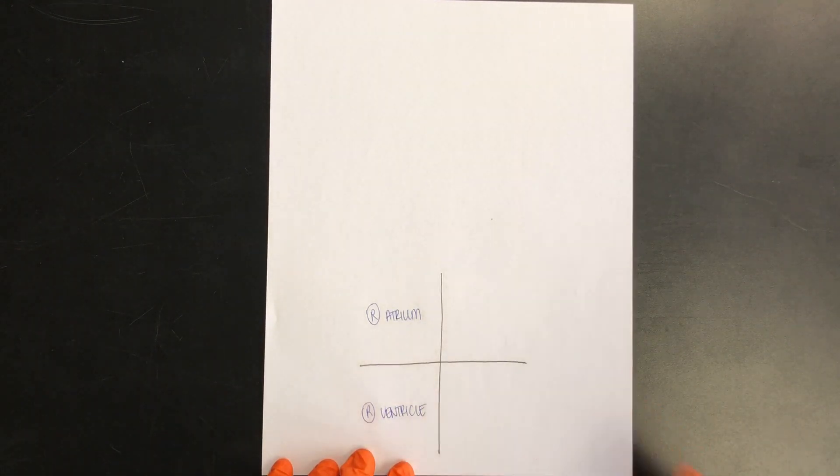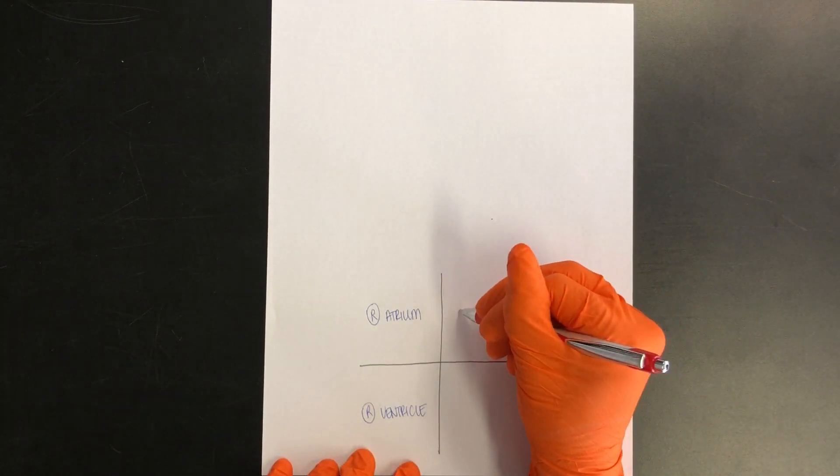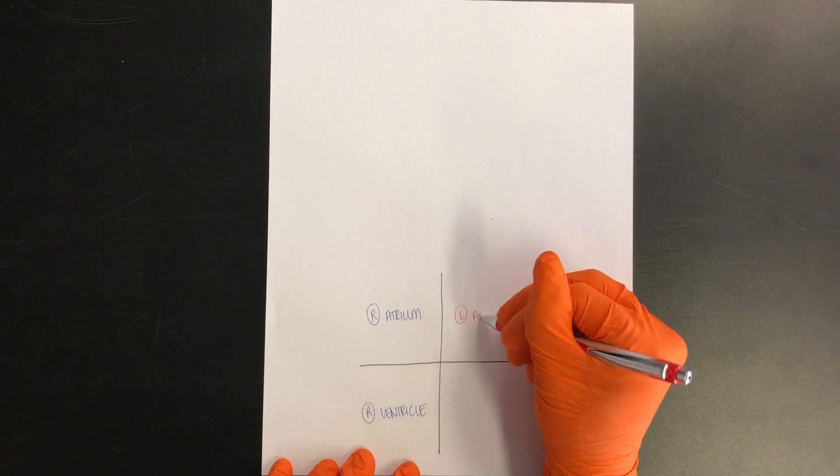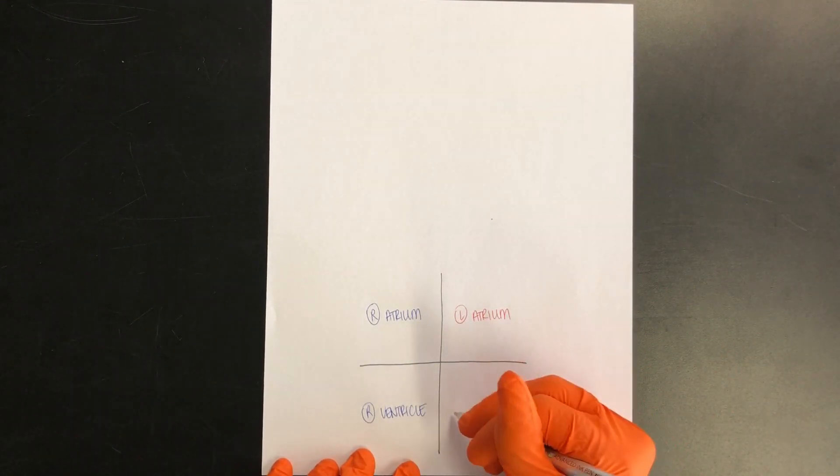The left side of the heart carries oxygenated blood, so we want to use our red pen. So this will be the left atrium, and then likewise, the left ventricle.